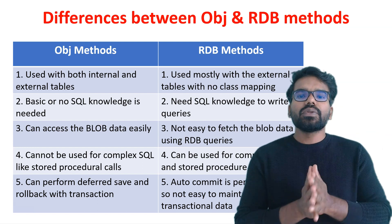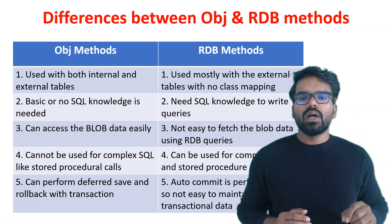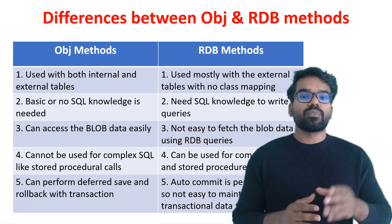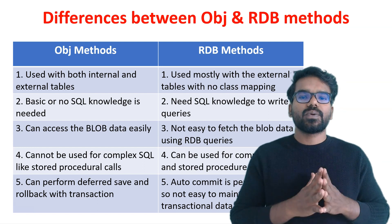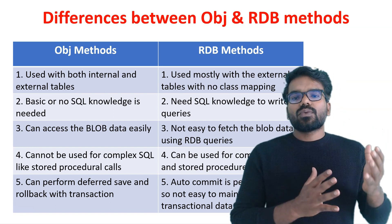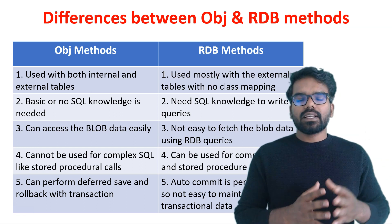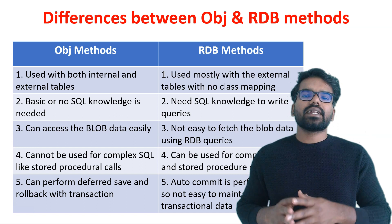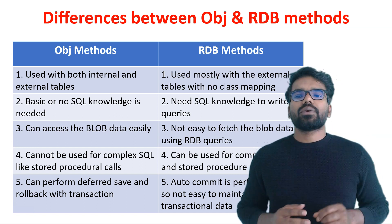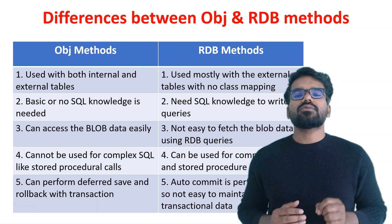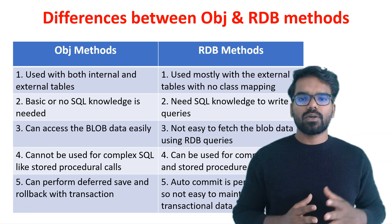But with the RDB method, you need to create a new rule called the Connect SQL rule. Inside the Connect SQL rule, you have to write the SQL query yourself, and Pega will use that query and execute it against the database. So with the OBJ method, the query is automatically generated and executed. But with the RDB method, you have to write your own query. That is why you need at least basic SQL skills if you want to write RDB queries.